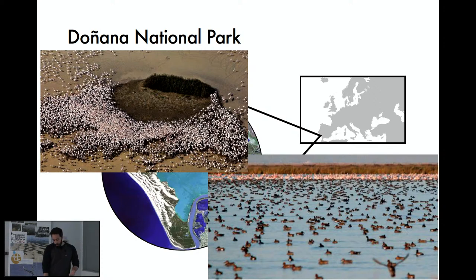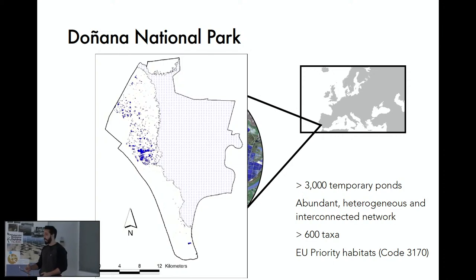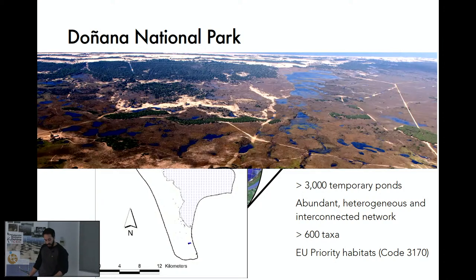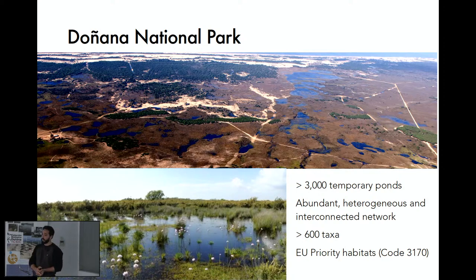I want to talk about another hidden wetland that lies on top of the sandy areas of the National Park: a network of more than 3,000 Mediterranean temporary ponds. These ponds are highly abundant, heterogeneous — ranging from a few permanent ponds to a lot of ephemeral ones — and are highly interconnected. These are key features for the high biodiversity held by the system, with more than 600 different taxa, and they are priority habitats in the European Union.